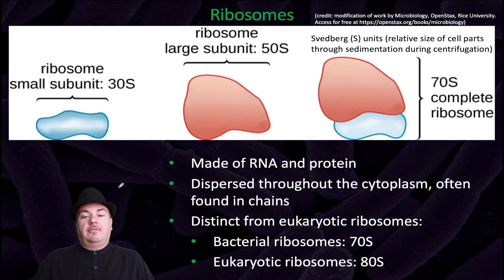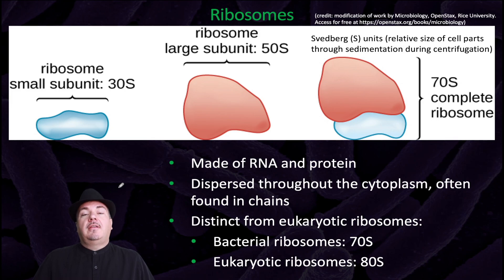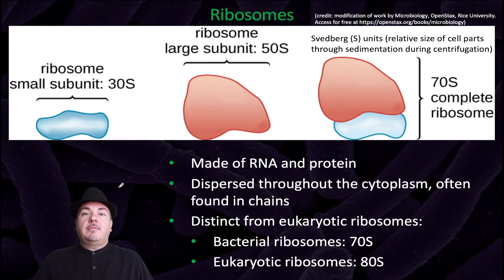Bacteria have ribosomes, just like eukaryotes have ribosomes. The bacterial ribosomes are made up of RNA — ribosomal RNA — and proteins. They're dispersed throughout the cytoplasm, and you often find them in chains. Now, they are distinct from the eukaryotic ribosome. Prokaryotic ribosomes and eukaryotic ribosomes are very similar, but they're not exactly the same.